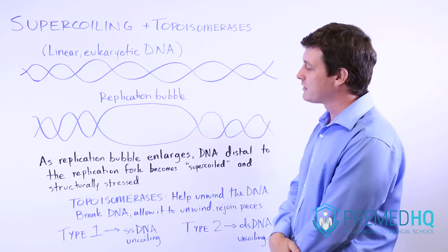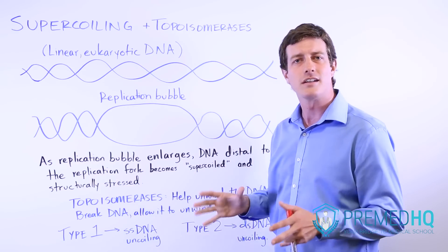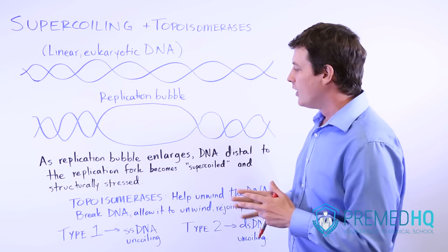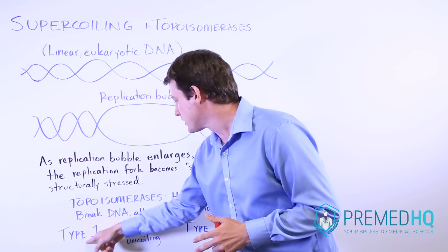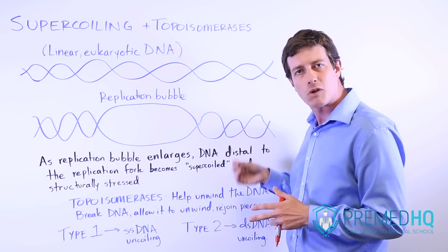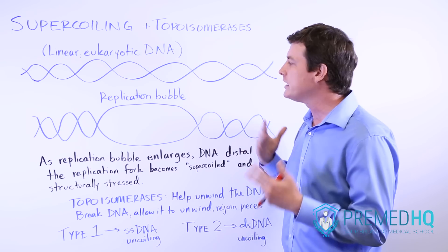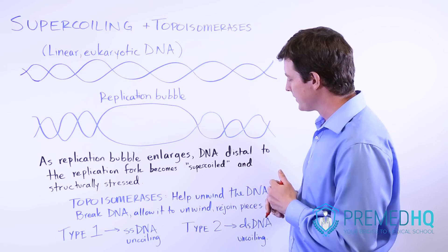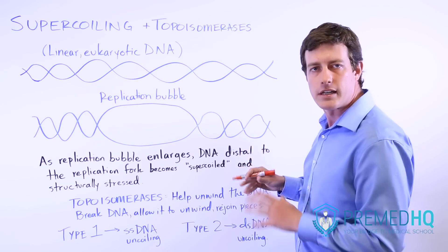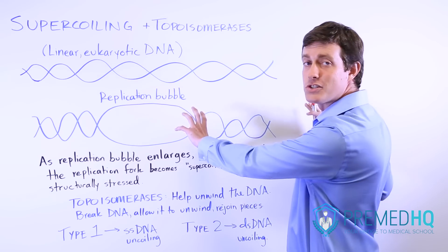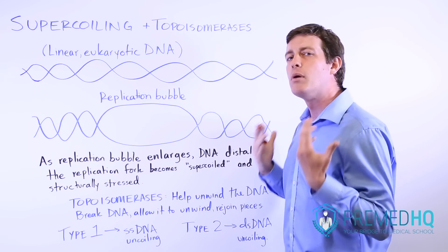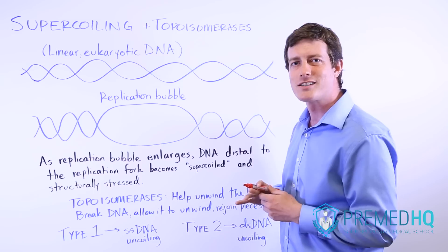There are two types of topoisomerases. You're not going to be tested on these directly, but just recognize that two types exist. Type 1 is for single-stranded DNA, so it only uncoils single-stranded DNA and helps relieve some of the mechanical stress. Type 2 is for double-stranded DNA, so it might cleave it in both places, allow the whole thing to unwind, and then rejoin the pieces to their original position, but with a bit less mechanical stress.